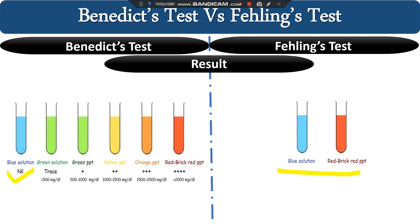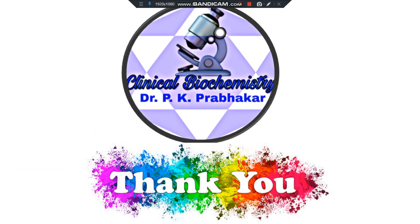Another difference is that the Benedict test can differentiate between reducing sugar and non-reducing sugar, whereas the Fehling test is normally used to differentiate between aldehyde and alpha-hydroxy ketone versus other carbohydrates. These are the key differences between the Benedict test and the Fehling test.